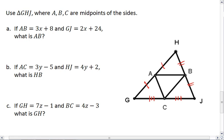If GH is 7Z minus 1, and BC is 4Z minus 3, what is GH? Take a moment, work this one out for yourself. When you're ready, resume the video, and follow along with my solutions.